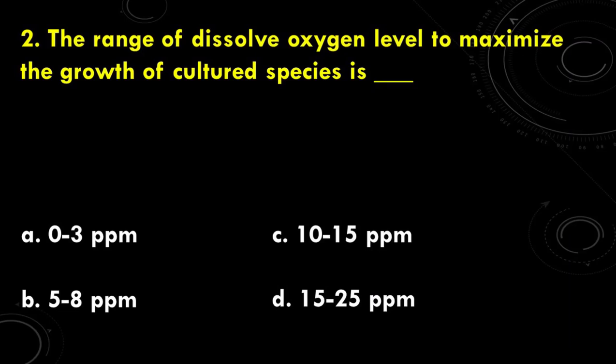For our second question: the range of dissolved oxygen or DO level to maximize the growth of cultured species is at. The options are: A. 0 to 3 parts per million, B. 5 to 8 parts per million, C. 10 to 15 parts per million, and D. 15 to 25 parts per million. The correct answer is B, 5 to 8 parts per million.